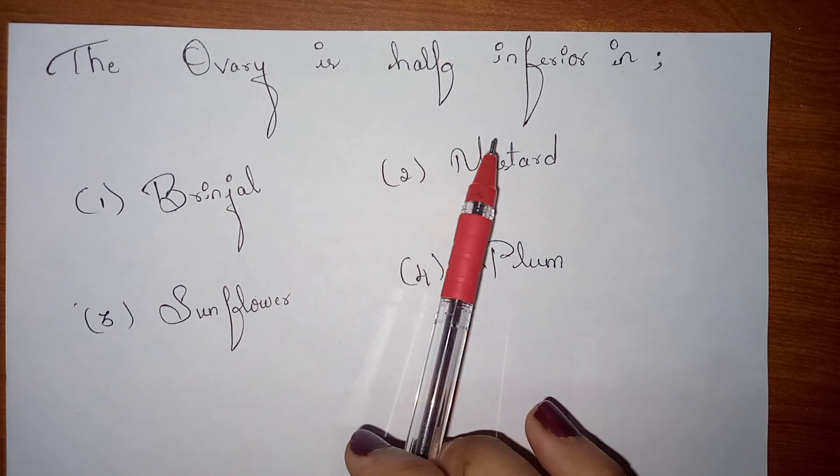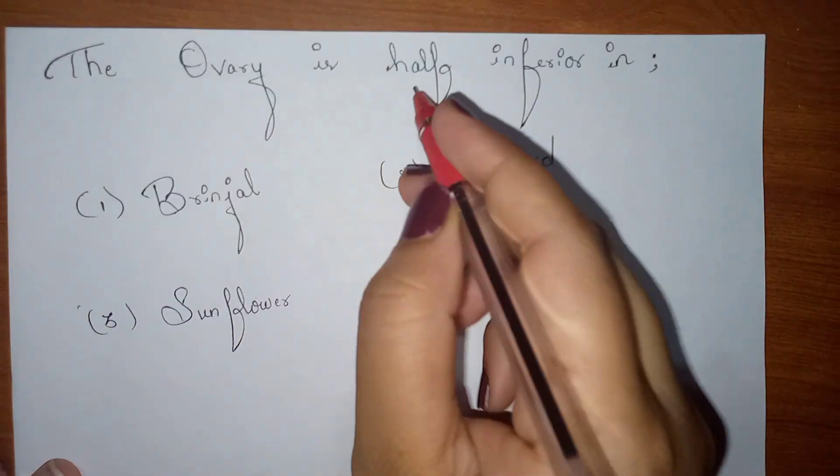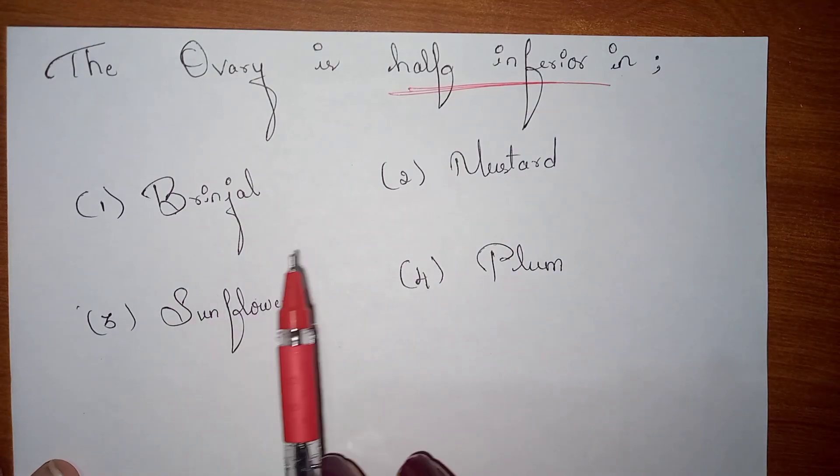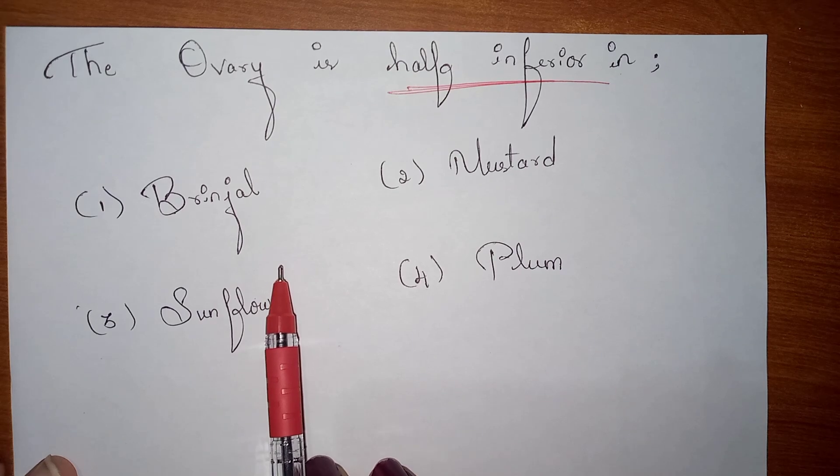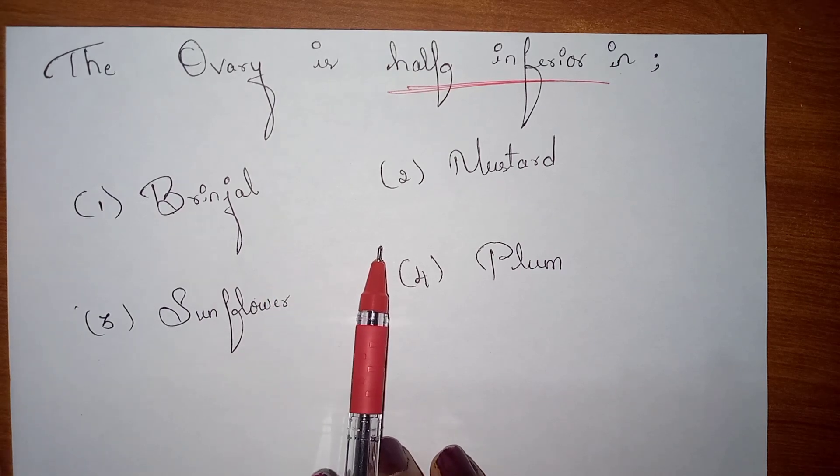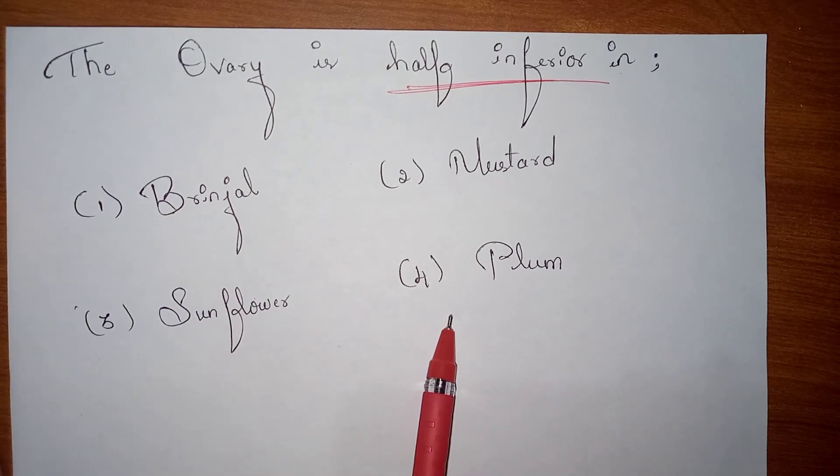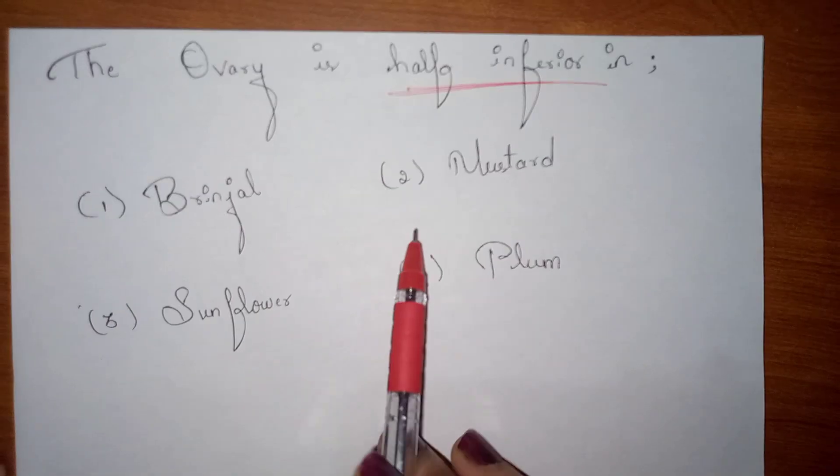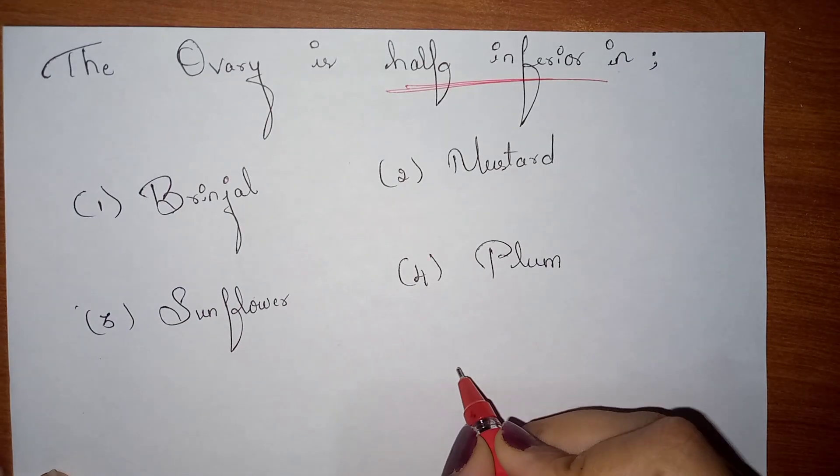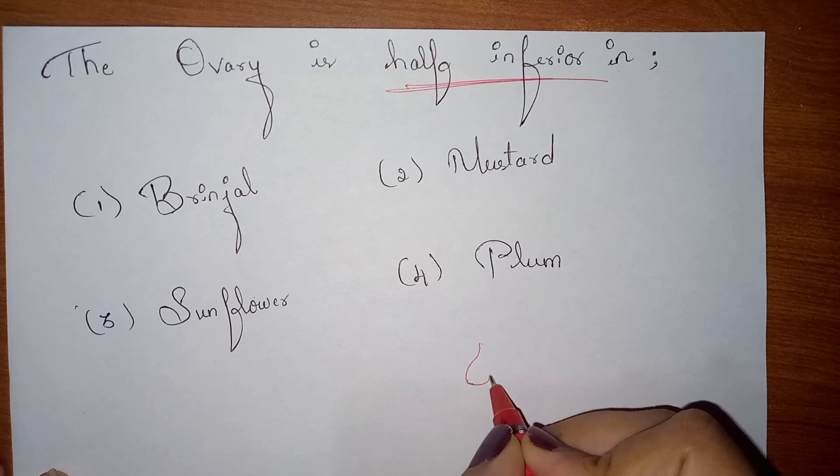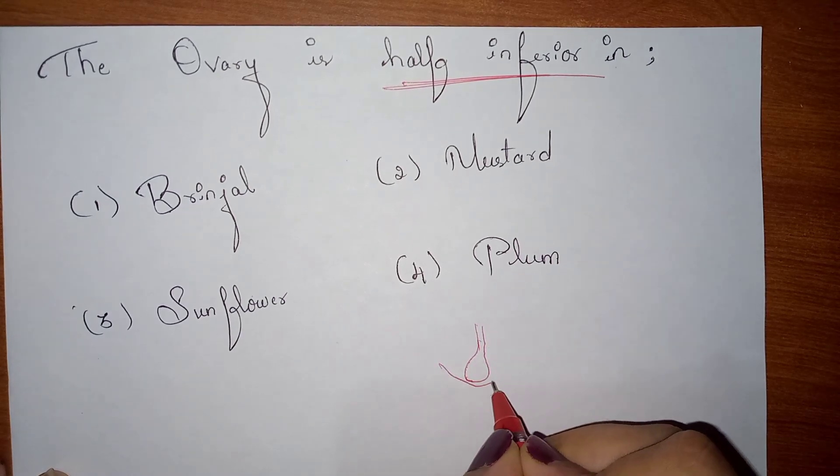The next question is: The ovary is half inferior, that means half inferior, in which of the following plants - Option 1: Brinjal, Option 2: Mustard, Option 3: Sunflower, Option 4: Plum.